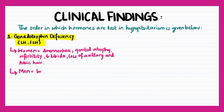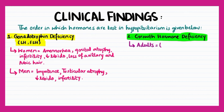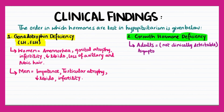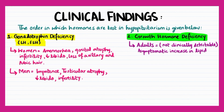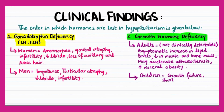In men, gonadotropin deficiency results in impotence, testicular atrophy, decreased libido, and infertility. Growth hormone deficiency occurs next and is not clinically detectable in adults. It causes an asymptomatic increase in lipid levels and a decrease in muscle and bone mass. It may accelerate atherosclerosis and increase visceral obesity. In children, growth hormone deficiency results in growth failure and short stature.